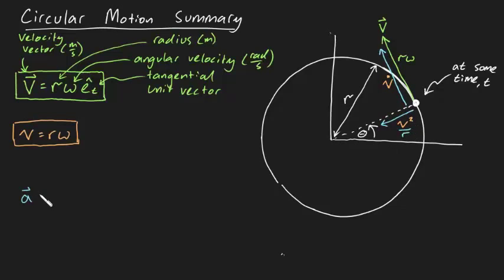This can be described mathematically by a equals v squared over r times en plus v dot times et.